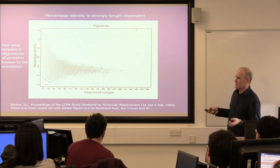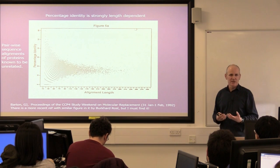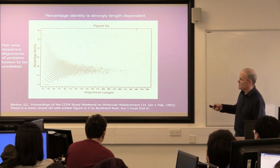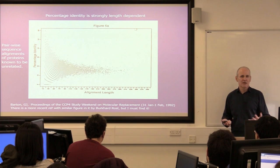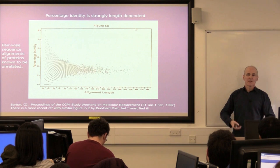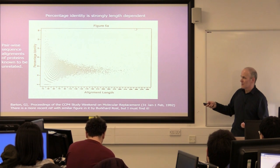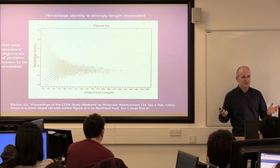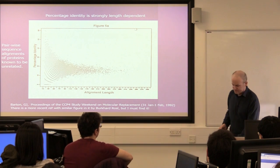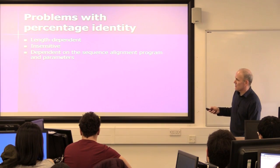The point of this slide is to emphasize that you can't use percentage identity on its own when looking at sequences. As sequences get longer, everything converges on about 18%. So if you take unrelated sequences and run them through a dynamic programming sequence alignment program — ClustalW or any of these programs — on average you'll get a percentage identity of around 16 to 18%. Seeing numbers like that doesn't necessarily mean these proteins are related. It's length dependent, it's insensitive, and it's dependent on the sequence alignment program and parameters. Depending on how you calculate it, you can get very different numbers.